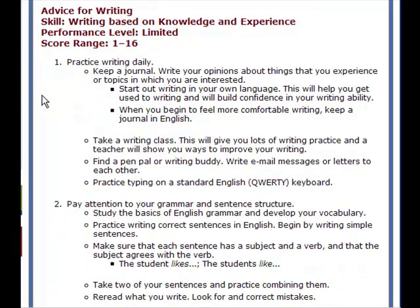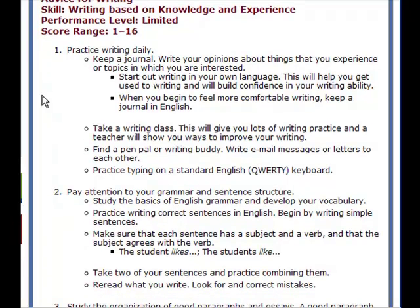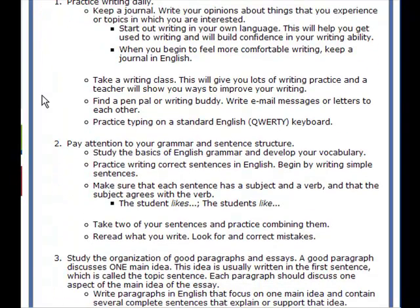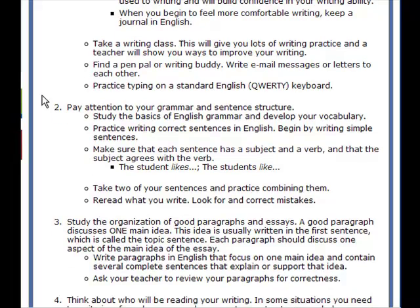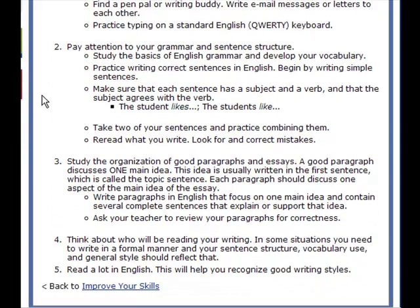Number one: practice writing daily. Keep a journal. Write your opinions about things that you experience or topics you're interested in. Start out writing in your own language — this will help you get used to writing and build confidence in your writing ability. When you begin to feel more comfortable writing, keep a journal in English. Take a writing class, which will give you lots of writing practice. Find a pen pal or writing buddy and write email messages or letters to each other.